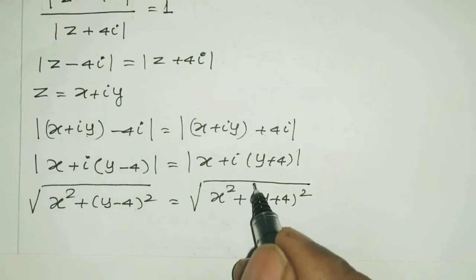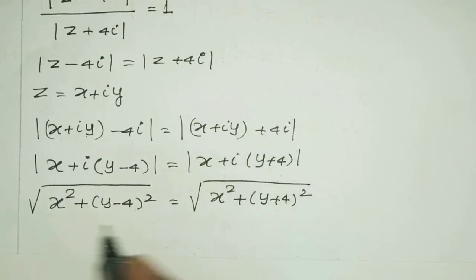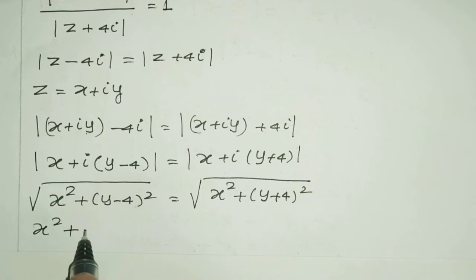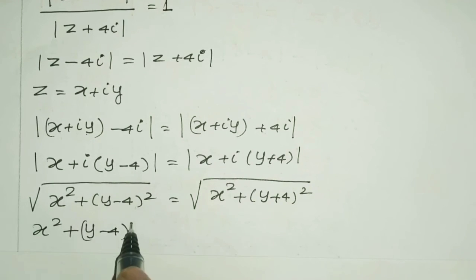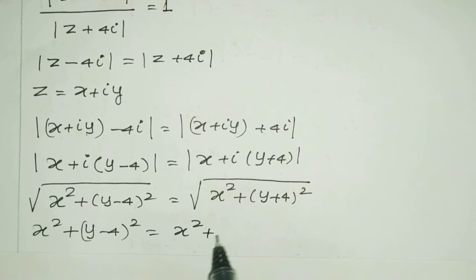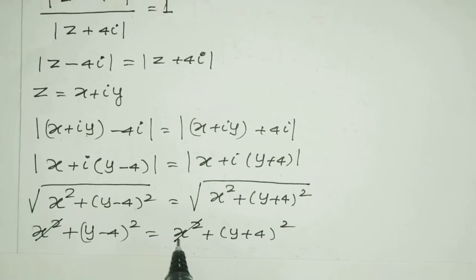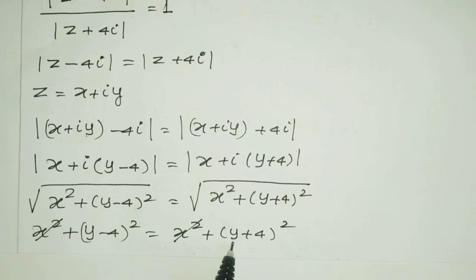To remove the square roots, squaring on both sides: x squared plus (y minus 4) whole squared equals x squared plus (y plus 4) whole squared. The x squared terms cancel on both sides, leaving (y minus 4) whole squared equals (y plus 4) whole squared.